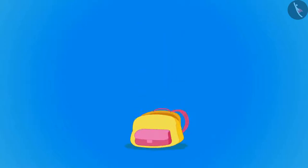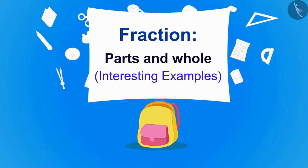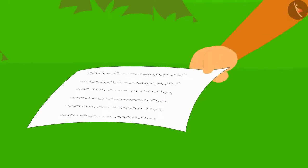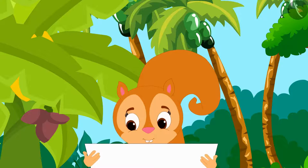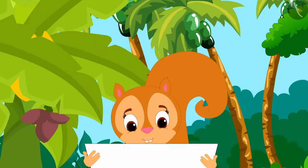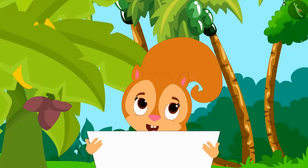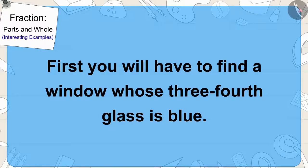In this video, we will see some interesting examples related to this. One day, Chanda was walking in the garden where she found a letter. It was written in the letter that she would have to find some clues, and if she solves all the clues, she would find a treasure. Chanda got excited and quickly read the letter further. It was written that first, Chanda will have to find a window whose three-fourth glass is blue.